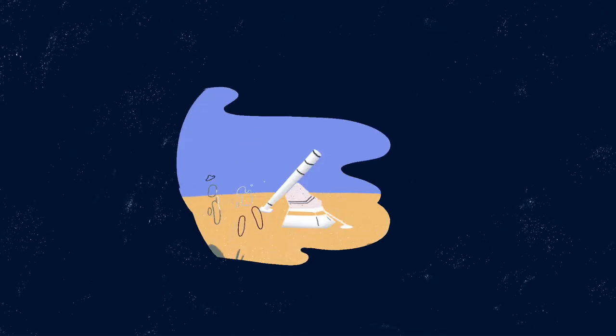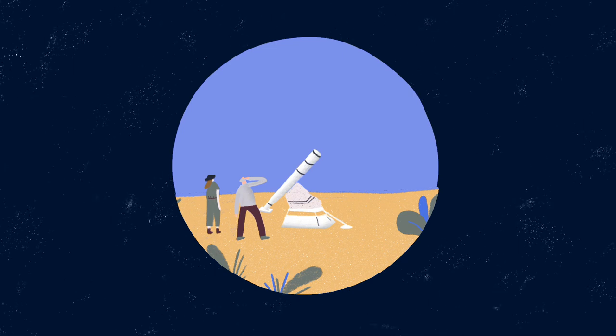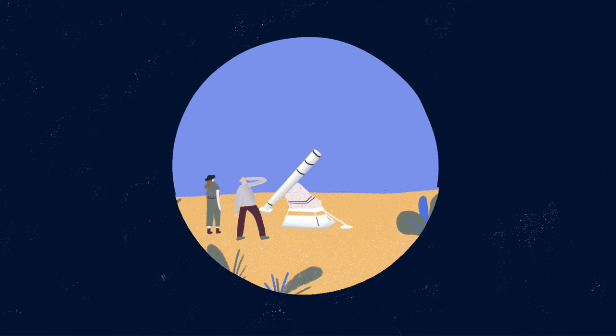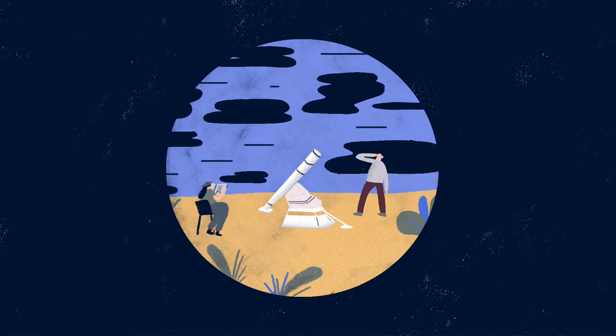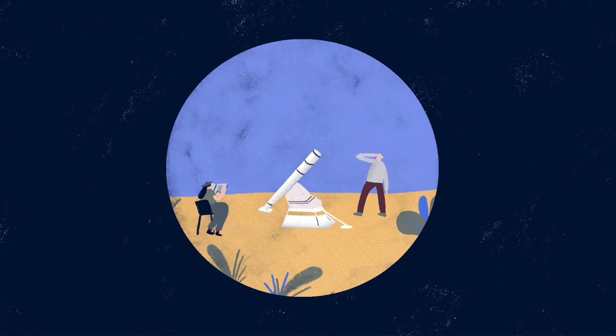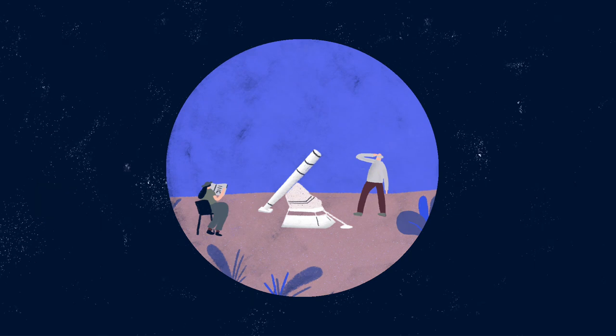Barely six months after the end of the First World War, on a small island of Principe off the coast of Africa, Eddington and his team waited out heavy rains and cloud cover until the sky broke through, the eclipse already underway.